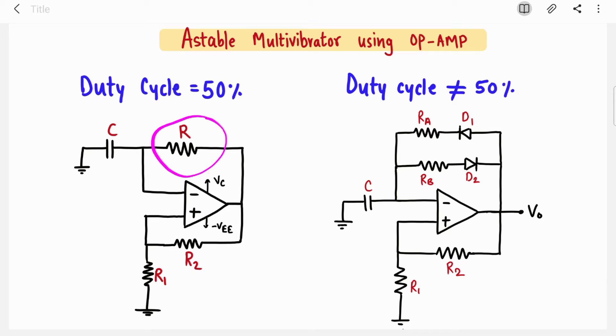First of all, what is the difference between these two circuits? Your feedback loop is replaced with two resistors and two diodes connected in parallel. This circuit gives you a 50 percent duty cycle square wave and this circuit gives you other than 50 percent duty cycle square wave.